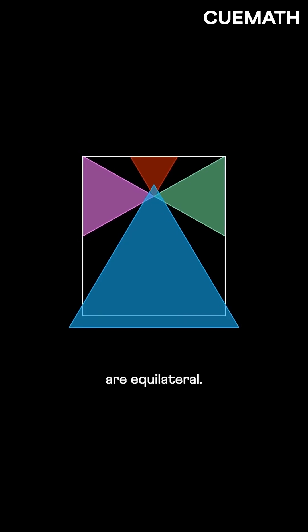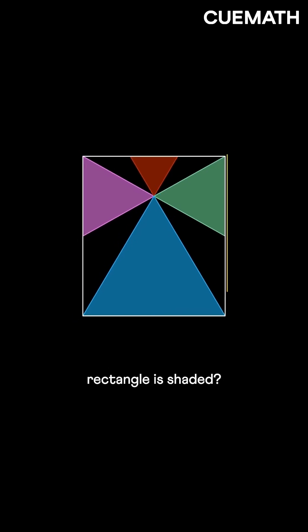All these four triangles are equilateral. What fraction of the rectangle is shaded? Here's how we can solve it.